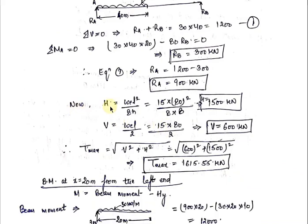The horizontal thrust H is given by WE·L² upon 8h. Putting in the values: WE is 15 kN/m, L is 80 meters, and the dip h is 8 meters, so the horizontal thrust H comes out to be 1500 kN. The vertical reaction at supports V equals WE·L/2, which gives V equal to 600 kN. Therefore, the maximum tension in the cable is the square root of V² plus H², which comes out to be 1615.55 kN.